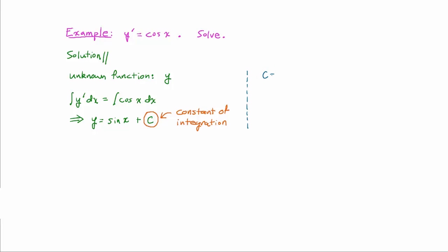For example, if c equals 1, then y equals sine of x plus 1, and the derivative of y is cosine of x plus the derivative of 1, which is 0 because 1 is a constant. Therefore, y prime is just cosine of x.